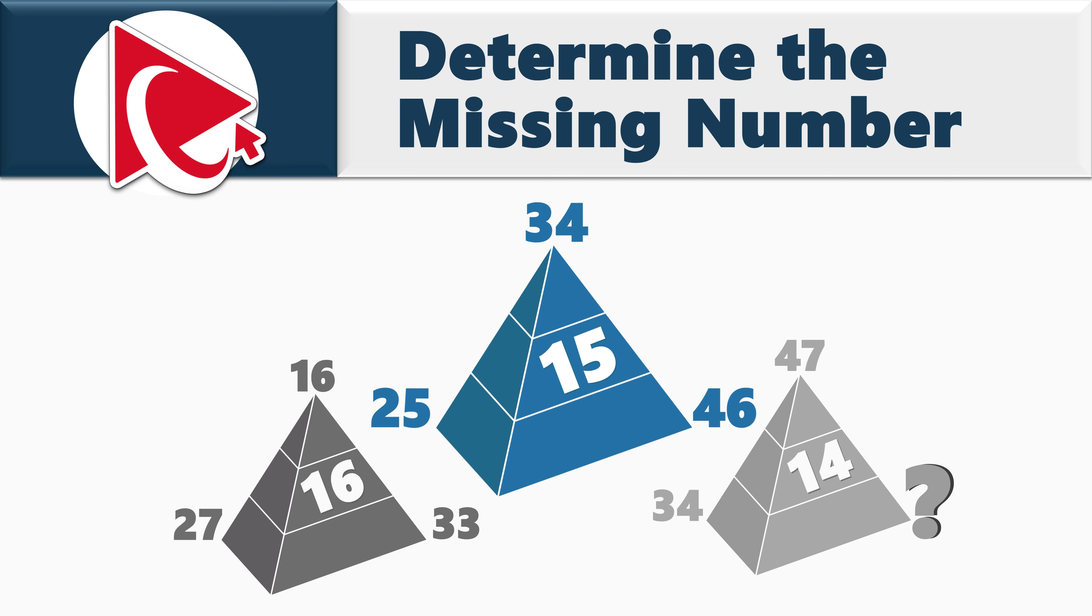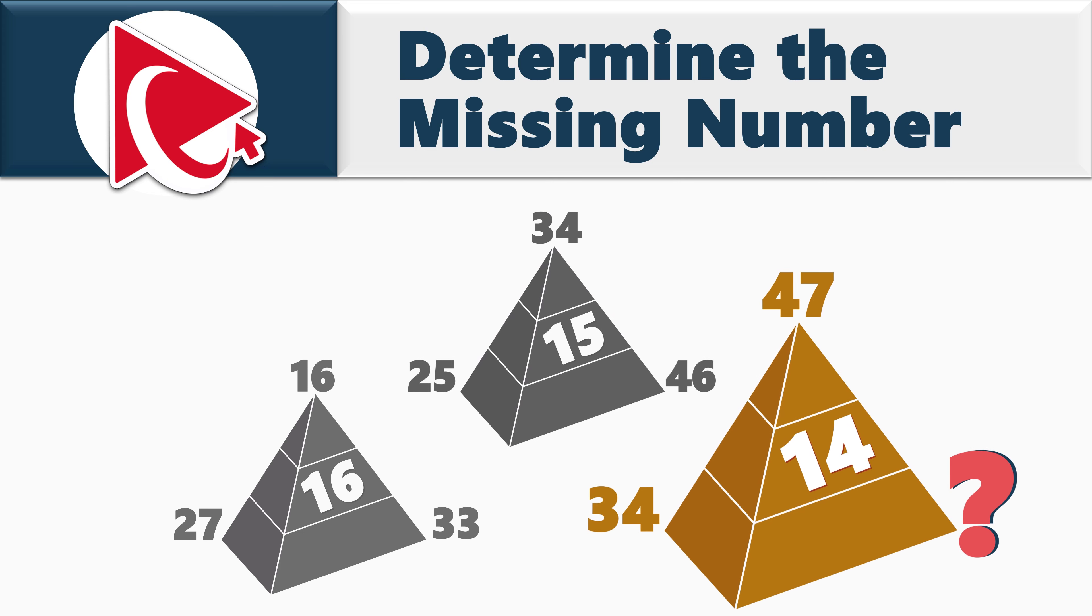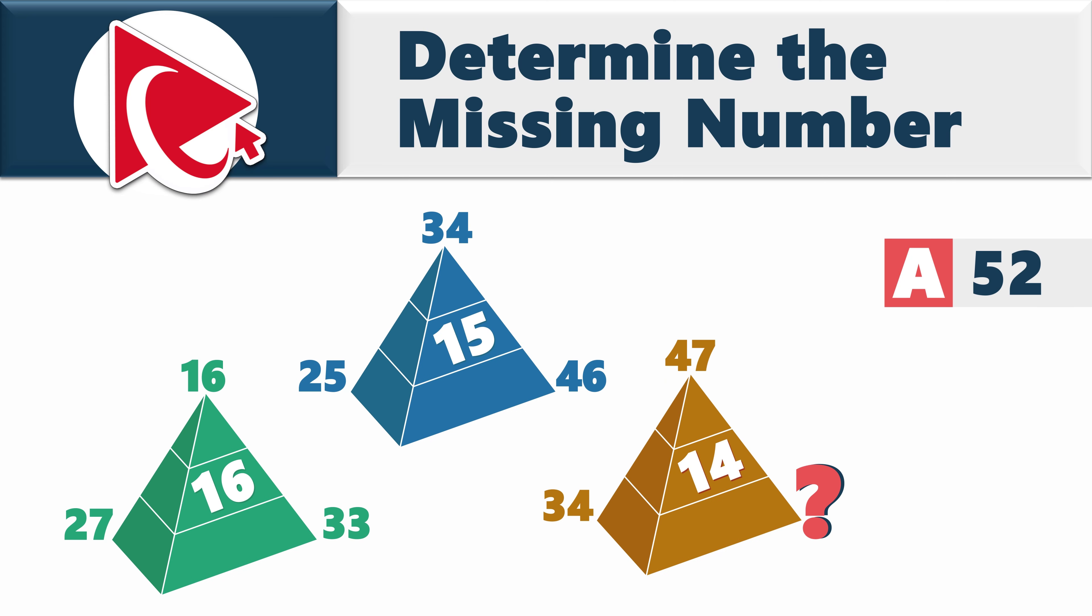In the second pyramid, the numbers are 25, 34, and 46 on the outside and the inside number is 15. And on the last pyramid, the inside number is 14 and the numbers on the outside are 34, 47 and then comes the missing number which you need to determine and select out of four possible choices: choice A, 52, choice B, 53, choice C, 54, and last but not least, choice D, 55.